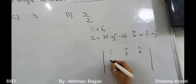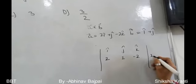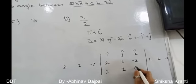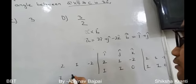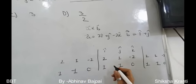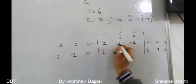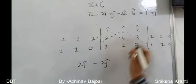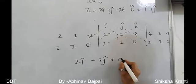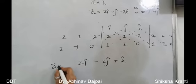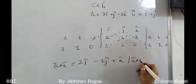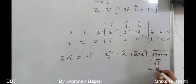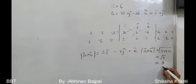First, compute a×b using the determinant: |i  j  k; 2  1  -2; 1  1  0|. This gives i(1·0 - (-2)·1) - j(2·0 - (-2)·1) + k(2·1 - 1·1) = 2i - 2j + k. So |a×b| = sqrt(4 + 4 + 1) = sqrt(9) = 3.